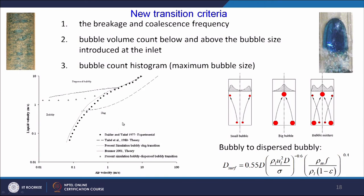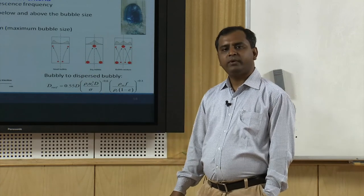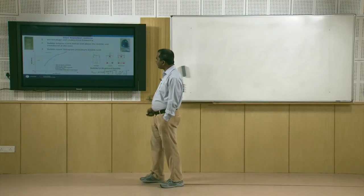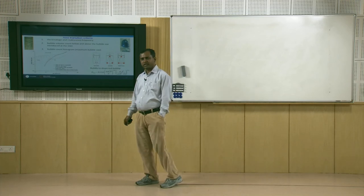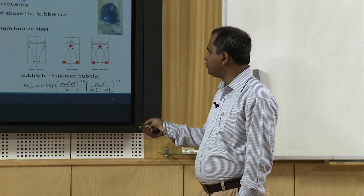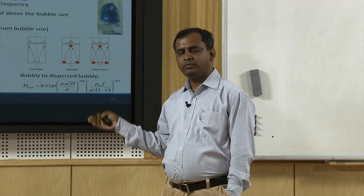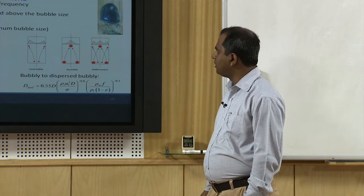By plotting different liquid and air velocities on a flow regime map, we can separate bubbly flow from slug flow — and the present model predicts the experimental work very nicely. We can also predict bubbly-to-dispersed bubbly flow conversion, using the dispersed diameter as criteria: if average bubble size is below a critical diameter (dependent on tube diameter, liquid velocities, and fluid properties), that is dispersed flow; above this, we have bubbly flow.